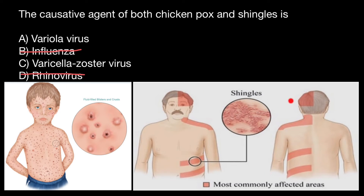Most people who develop shingles have only one episode during their lifetime; however, you can have shingles more than once. In the picture you can see a child affected with chickenpox and an adult affected with shingles. Usually people over 50 years old develop shingles, and it is localized in certain areas of the body and is more dense than chickenpox, which is spread all over the body.